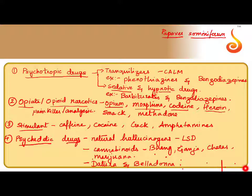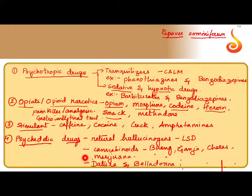Heroin and smack are taken from the latex of the poppy plant. As mentioned, all opioid narcotics are taken from Papaver somniferum. These are also painkillers, and they basically work on the gastrointestinal tract as their site of function. Along with being painkillers, they also work as depressants, similar to psychotropic drugs, so they simultaneously have depressant functions.